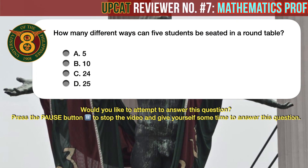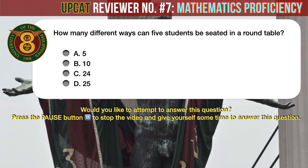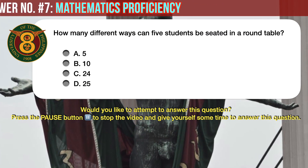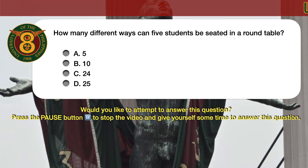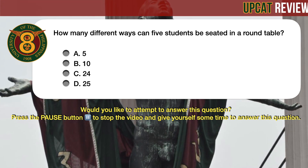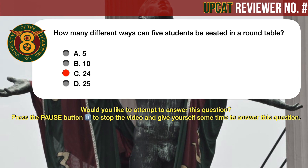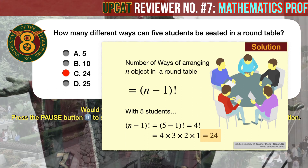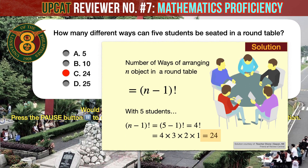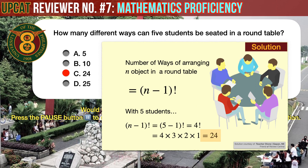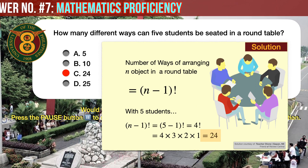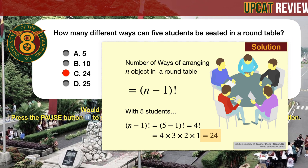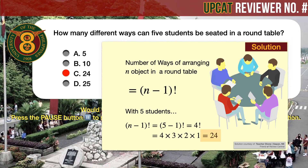Question number 8. How many different ways can 5 students be seated at a round table? The correct answer is C, 24. The number of ways of arranging n objects in a round table is given by (n minus 1) factorial. With 5 students: (5 minus 1) factorial equals 4 factorial equals 4 times 3 times 2 times 1 equals 24.